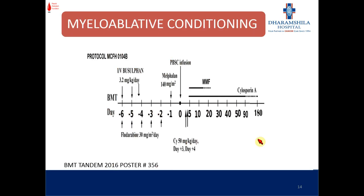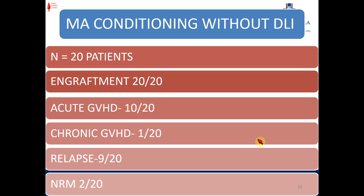We moved to a myeloablative protocol by escalating the doses of melphalan and busulfan. We have published our data in the pediatric population, and employed this protocol with 20 patients. The incidence of acute GVHD was 50% — possibly because this protocol included more children. Chronic GVHD was seen in 1 patient, NRM was 2 out of 20 patients, and relapse was seen in 9 out of 20 patients.